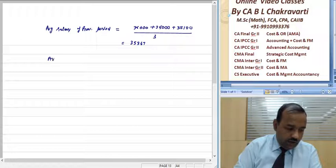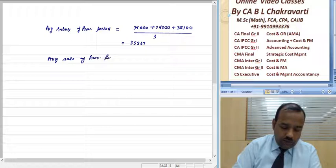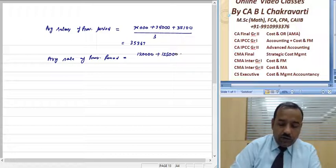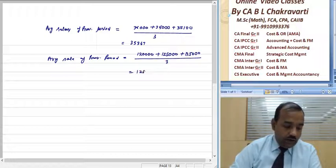Then we calculate the average sales of the previous period: 1,20,000 plus 1,25,000 plus 1,35,000 divided by 3. Here we go, 1,26,667.